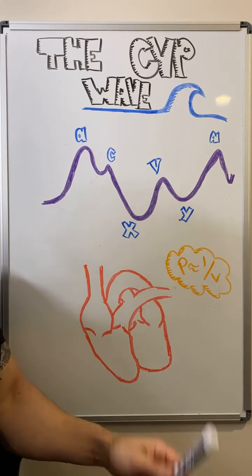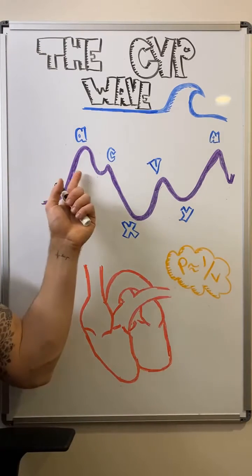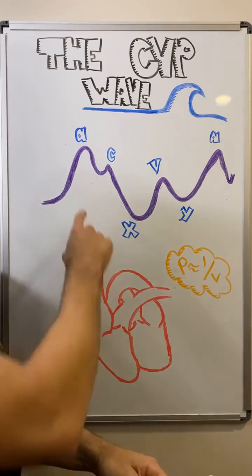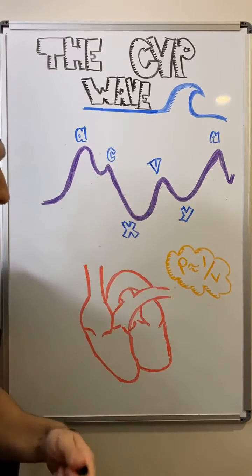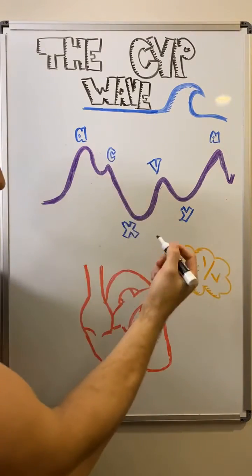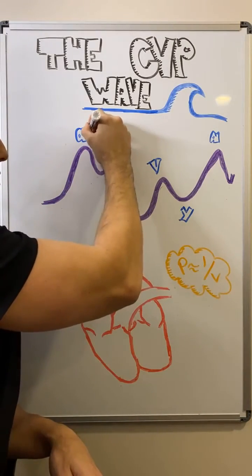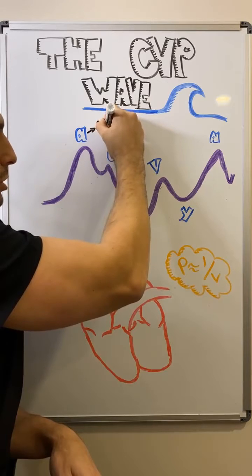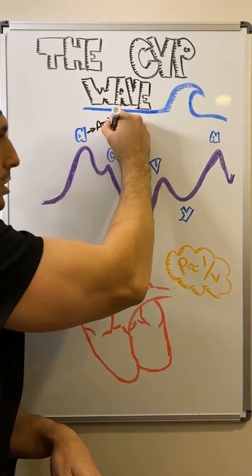So the first thing that's here is our A wave. That's our first big jump. Some people just remember this by remembering A for atrial contraction, but that's what's happening here - the atria is contracting.